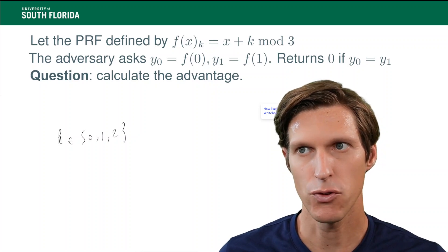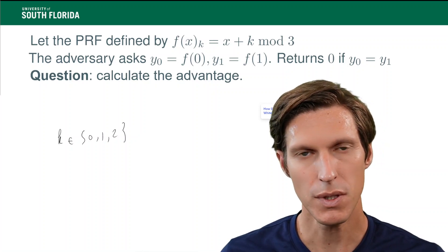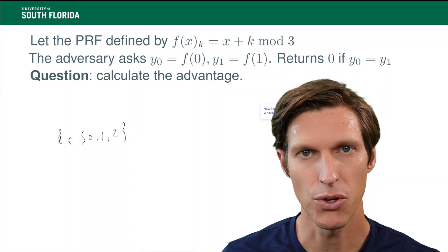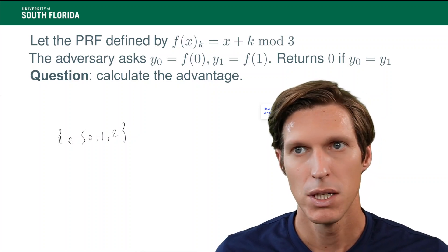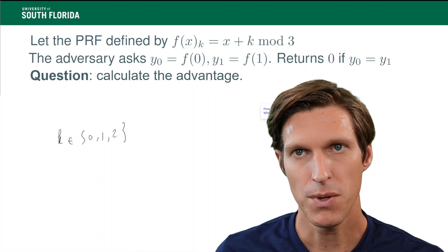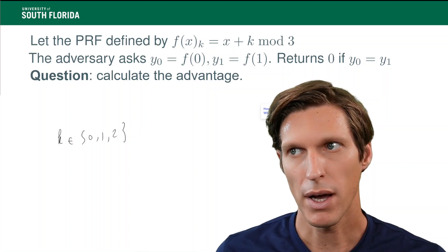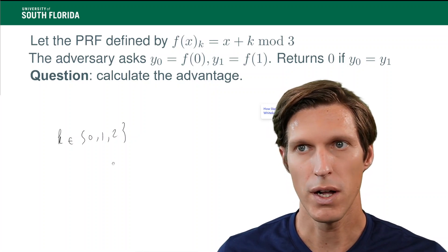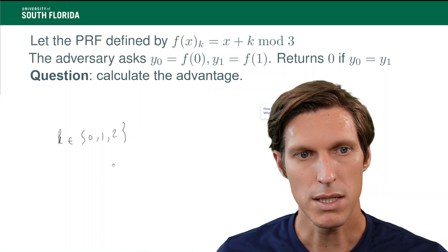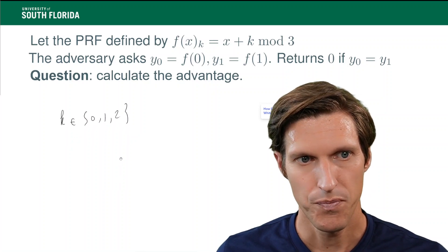Now, the adversary asks for two values. Again, remember, these are very toy examples. Could ask for all the values, right? But let's say the adversary that I'm giving here is behaving this way. It asks for the value of 0 and the value of 1 and returns 0 if those values match. Now, what is the advantage of such an adversary?